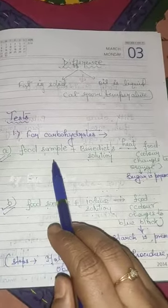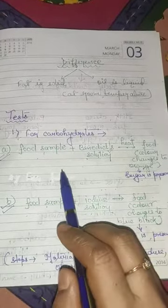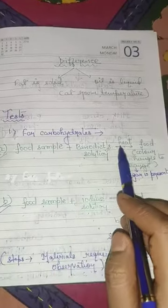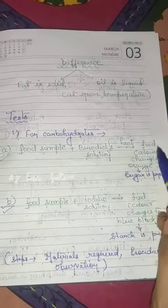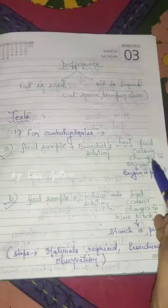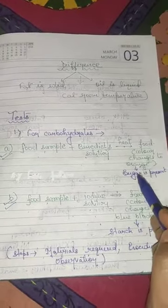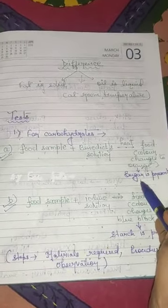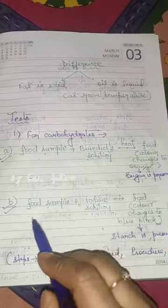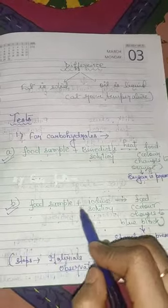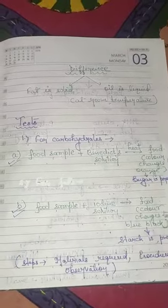First, take the given food sample and add Benedict solution to it. Heat the mixture. If the food color changes to orange, it shows the presence of sugar.